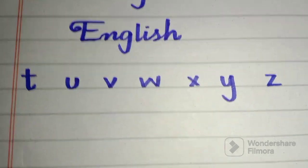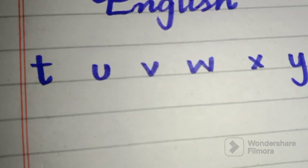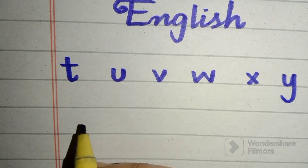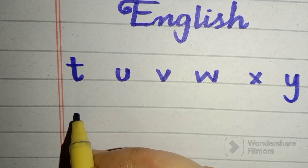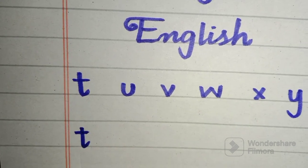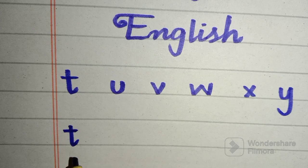This is small 't'. It is written on the top three lines. Small 'u' is on the middle two lines. Small 'v' is on the middle two lines. Small 'w' is on the middle two lines.